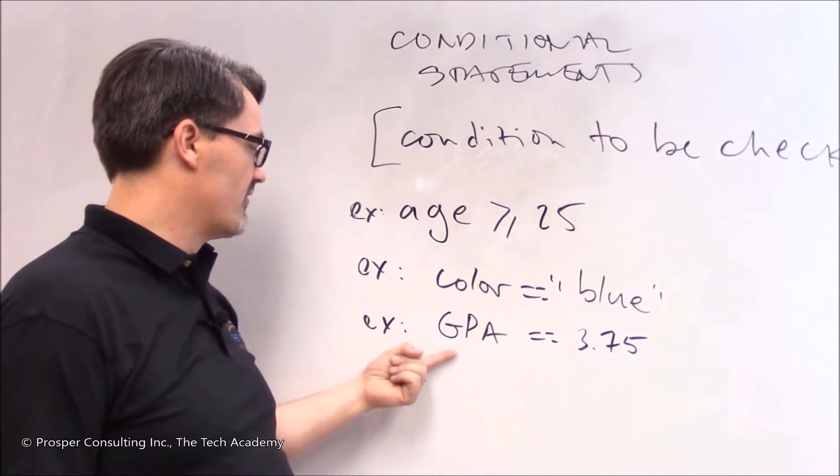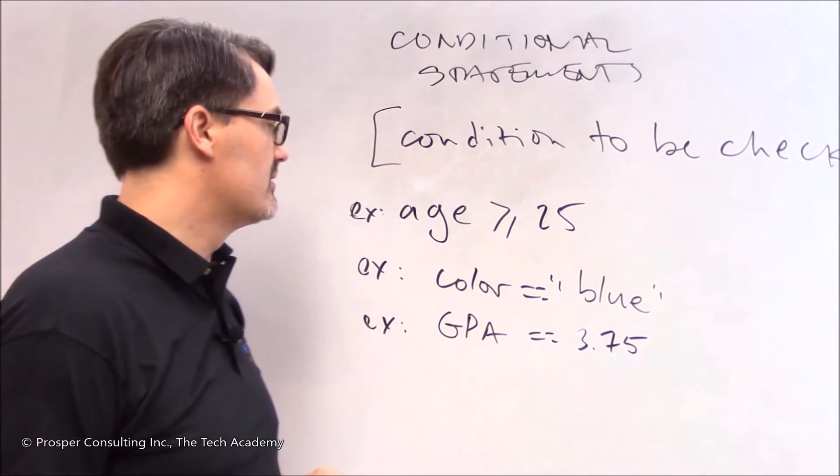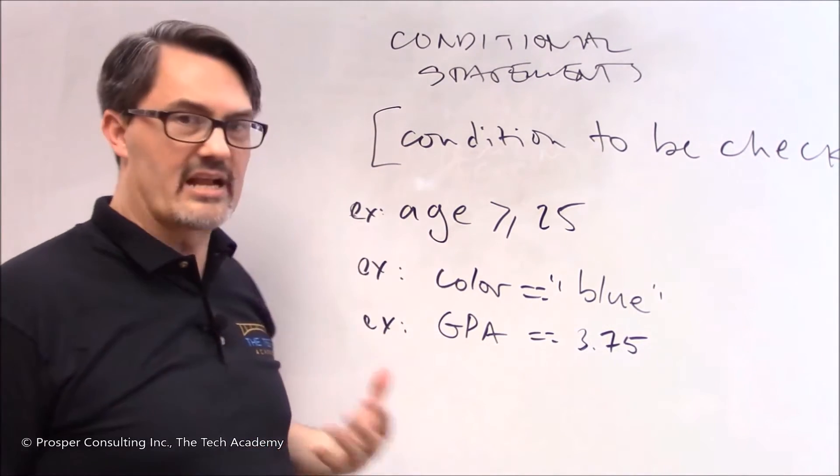Here's another example. A variable called GPA. Checking is it equal to 3.75. The way to read these in English is, is the thing on the left what's stipulated in the middle relative to the right?